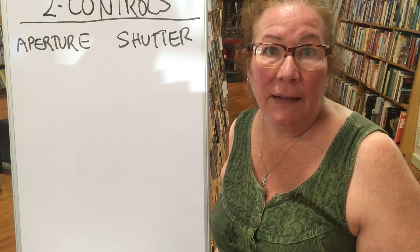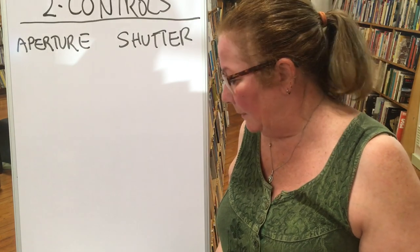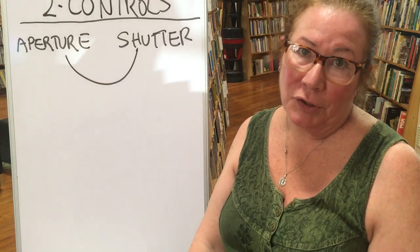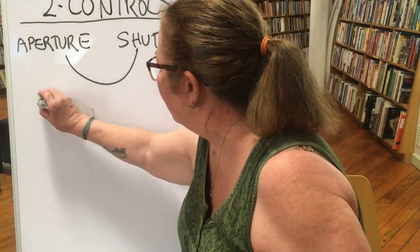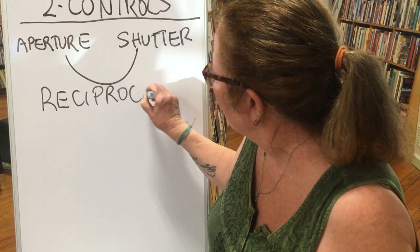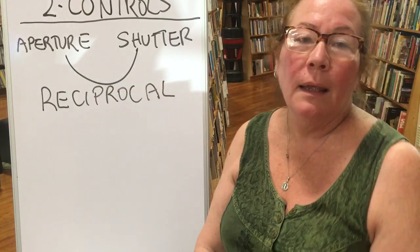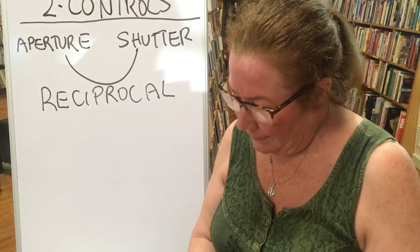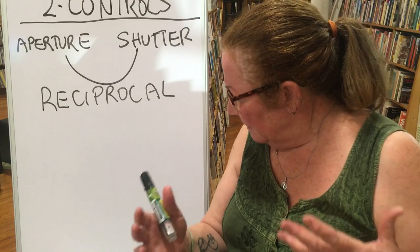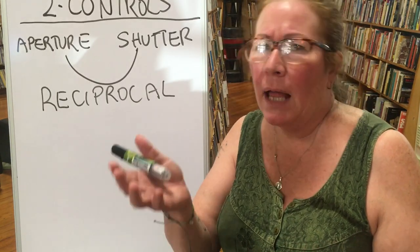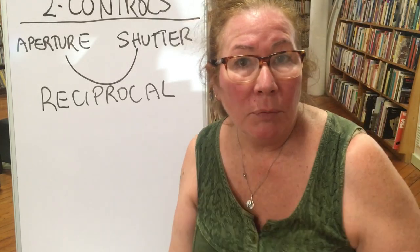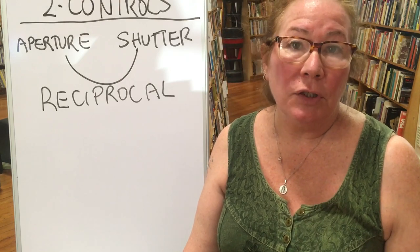The aperture and the shutter have what we call a reciprocal relationship. What is reciprocal? A lot of times my students will tell me it's about give and take, it's about balancing things out, it's about making things even — and those are all true. A reciprocal relationship is the best kind of relationship to have.